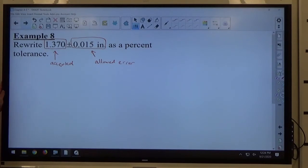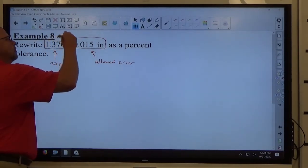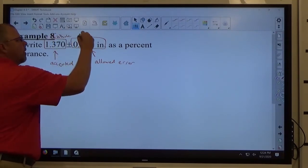When you look at a percent tolerance, you're looking for what percent the error is compared to the original. The accepted measurement is the whole, and how much we're off by is the part.